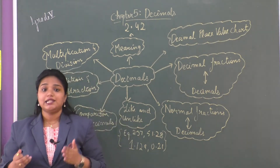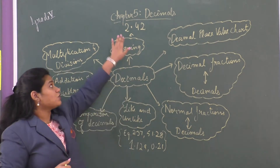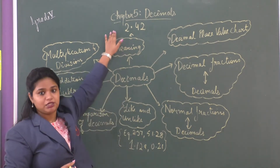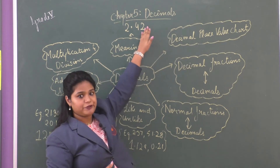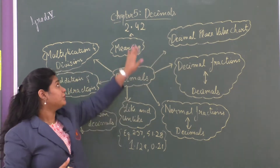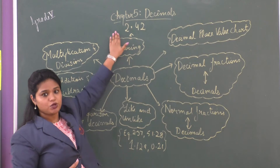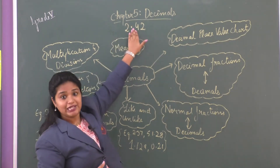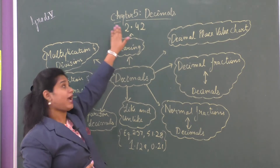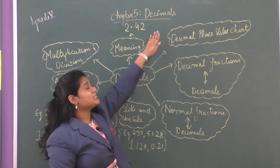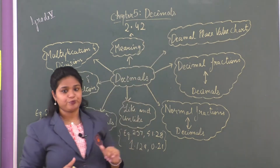We learned that a decimal number is made up of three parts. The first is the whole number part, then the decimal point, and the third is the decimal part. So here we have a decimal number 2.42. So 2 is the whole number, we have the decimal point in the center dividing the whole number part and the decimal part, and towards the right we have the decimal part that is 4 and 2.